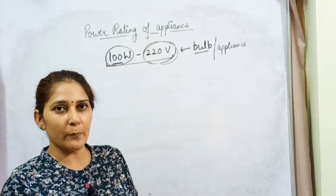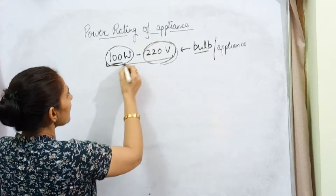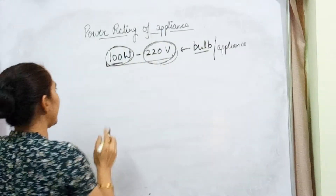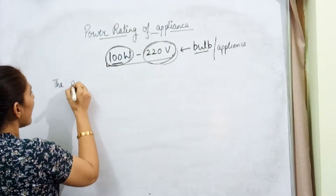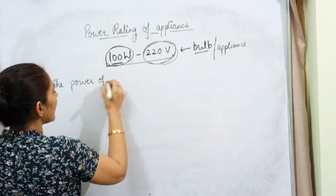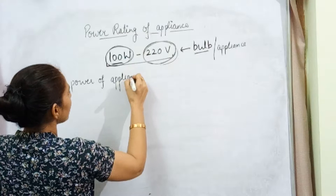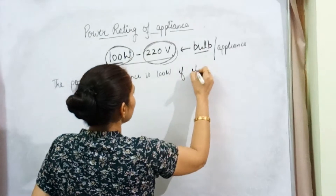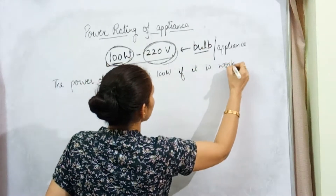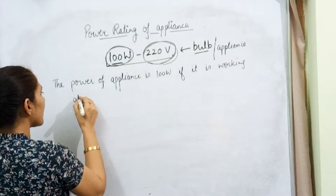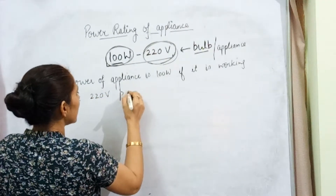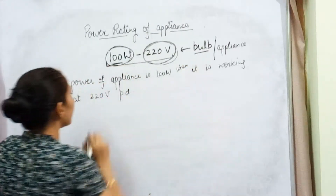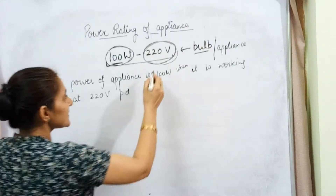And what can we understand with the help of this? This is the power of the appliance where it works at a certain potential difference. For example, the power of the appliance is 100 watt when it is working at 220 volt potential difference. This is the must condition.